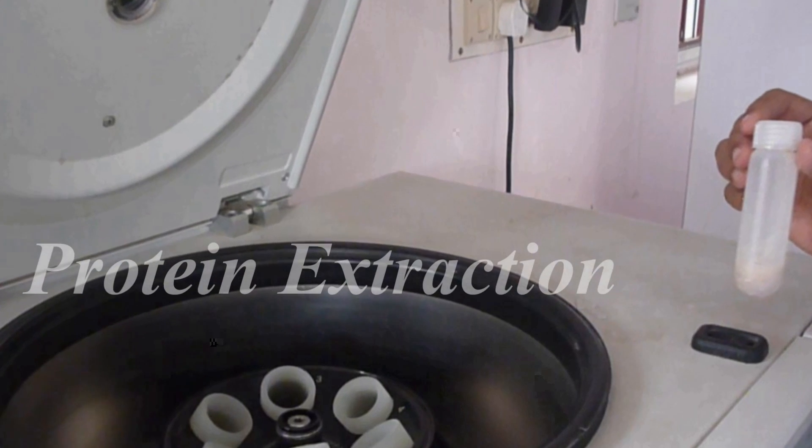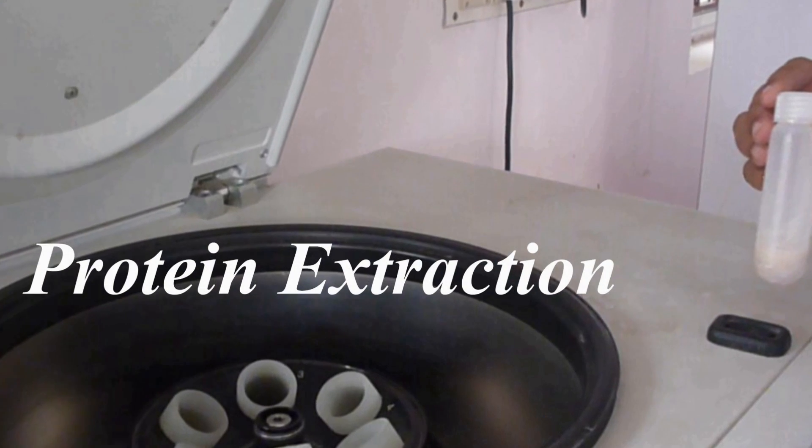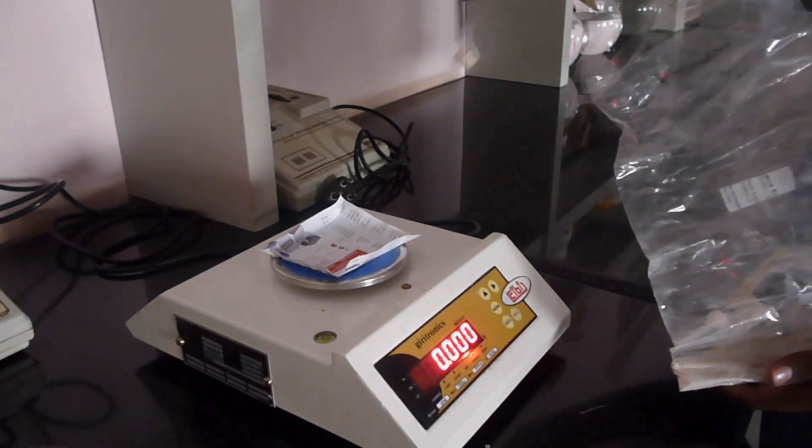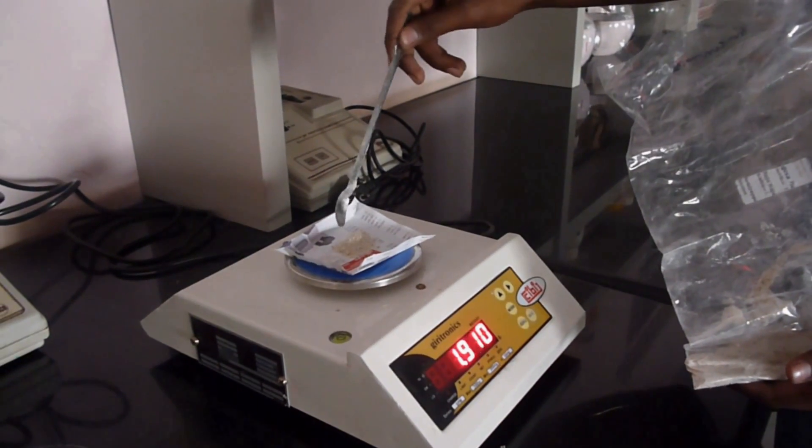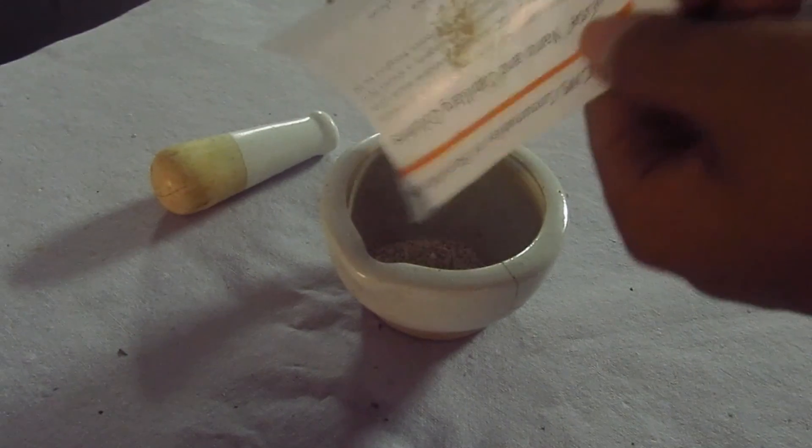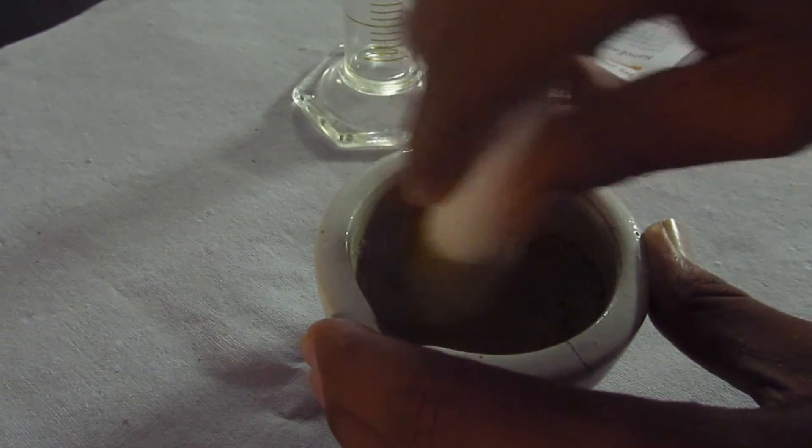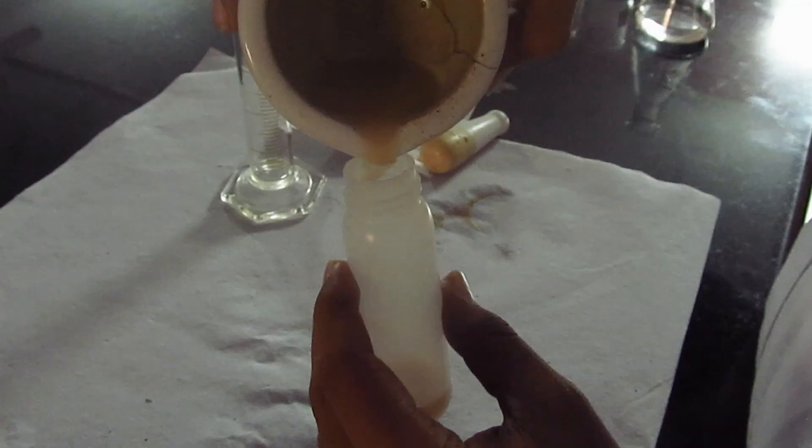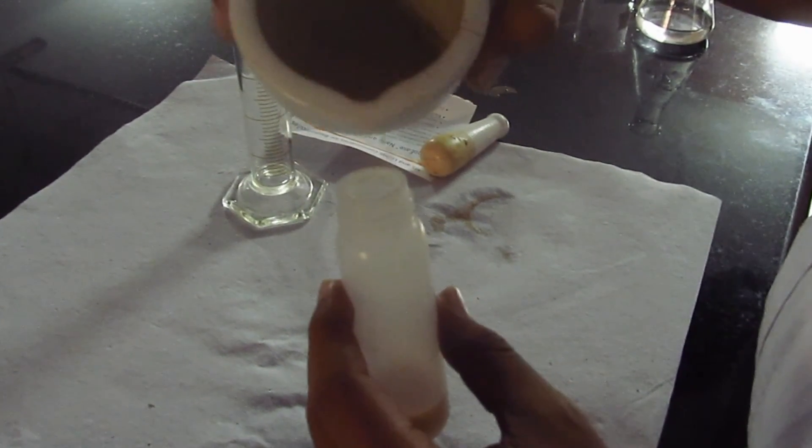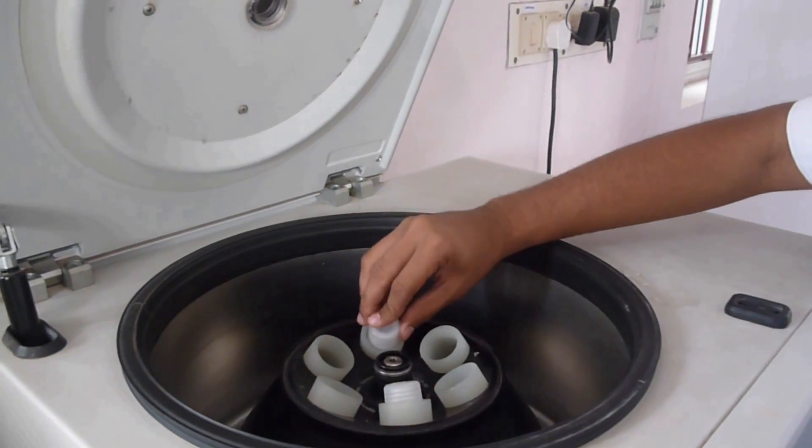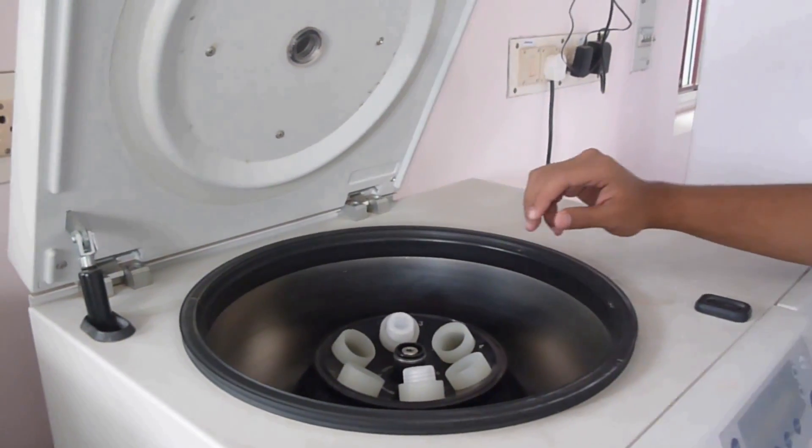Extraction of protein from the sample. Rice grains are taken and ground well to make it into a powder. Weigh 5g of rice grain powder and grind well with a pestle and mortar using 5ml of phosphate buffer. Transfer it to the centrifuge tube. Centrifuge it and use supernatant for protein estimation.